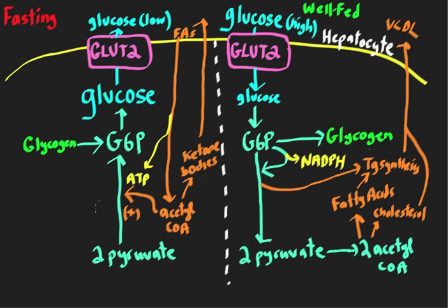In the fasting state, there isn't an opposite reaction to the pentose phosphate shunt — it's just not happening. If we are doing gluconeogenesis and glycogenolysis and making G6-phosphate, we want that to be going to glucose and out of the liver. We wouldn't want any of this precious glucose 6-phosphate going into the pentose phosphate shunt and potentially stealing some of it away.